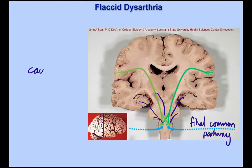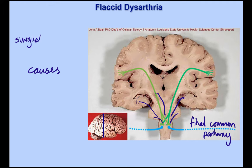The causes of flaccid dysarthria are any conditions which weaken the lower motor neurons. Common ones include surgical causes — for example, surgery to the parotid gland, where the facial nerve runs through, and if the surgeon isn't careful they can sever or damage that nerve, resulting in flaccid facial weakness and dysarthria. Their cheeks actually flap around as they talk, changing oral resonance and making them harder to understand. Surgery to the thyroid, where the recurrent nerve runs, can also result in vocal fold damage.